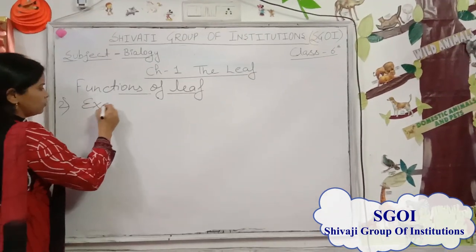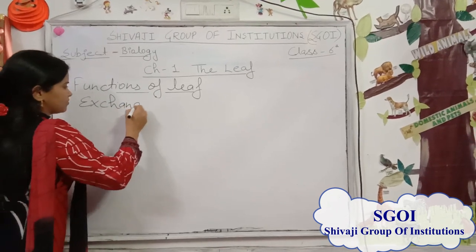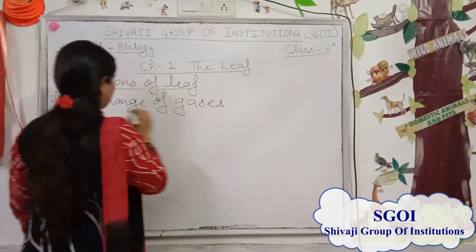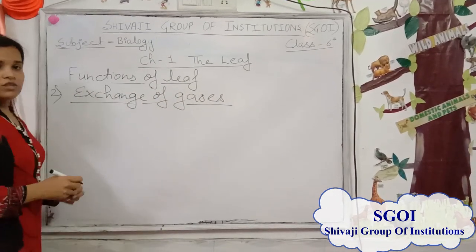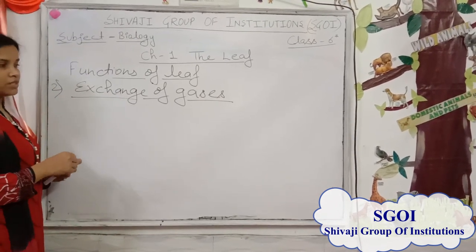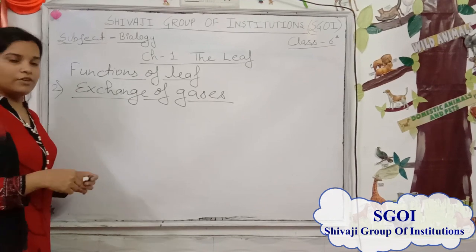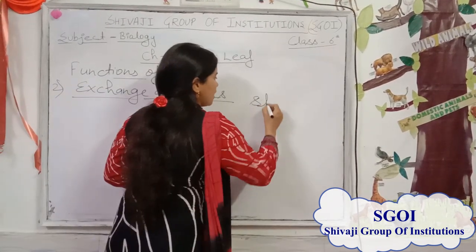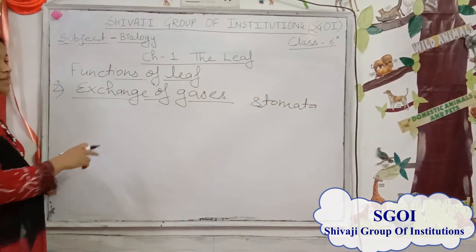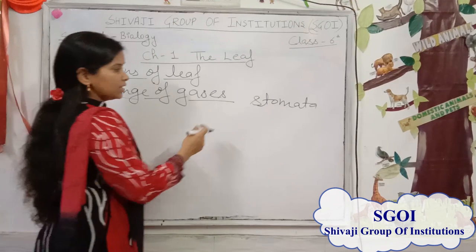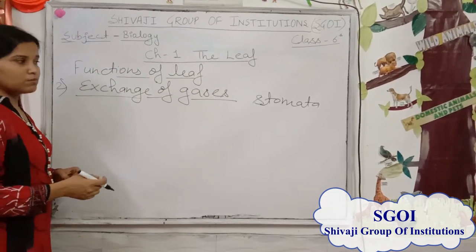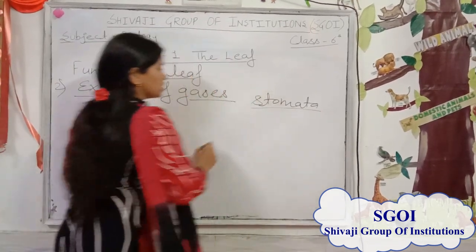The next function is the exchange of gases. On the lower surface of the leaf, there are tiny pores present called stomata. These stomata help in the exchange of gases — taking in oxygen and carbon dioxide for respiration and photosynthesis.